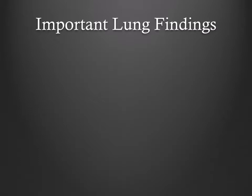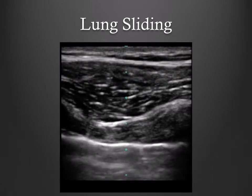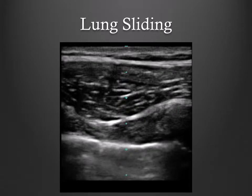Lung artifacts follow consistent patterns in specific disease states. The pleural line, seen on ultrasound as a hyperechoic horizontal line, moves in sync with respiration, resulting in lung sliding, which is the movement of the visceral against the parietal pleura. This video shows the glistening or shimmering of the pleura, where each white pixel of the pleural line changes to shades of gray throughout the respiratory cycle.